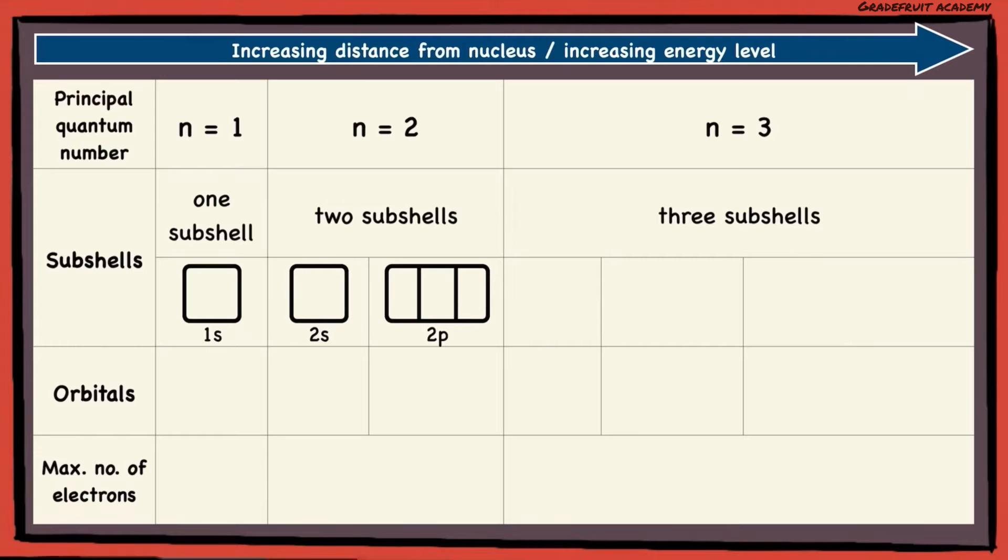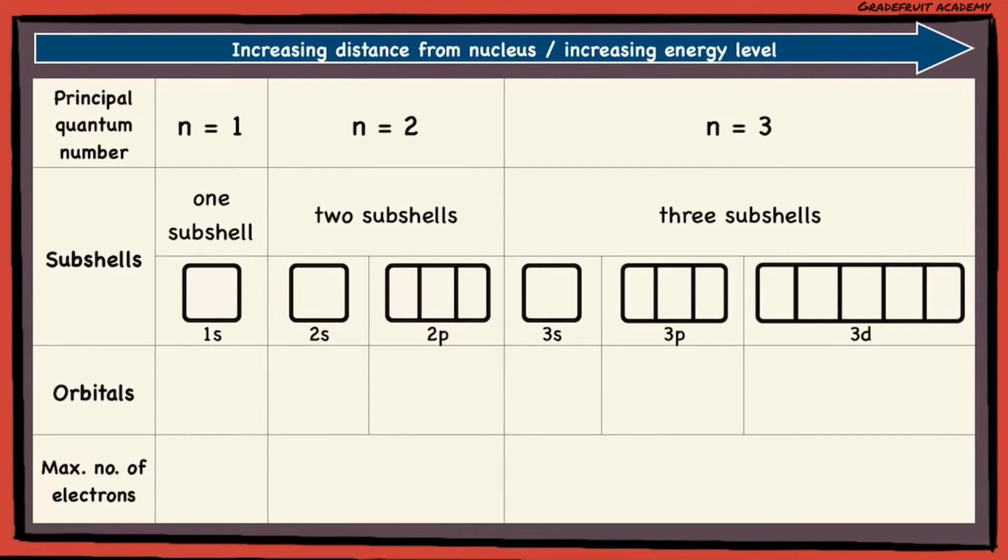And likewise, for the third one, there will be the 3S, 3P, and 3D subshells. So, it is like a successive build-up, S, SP, and SPD.